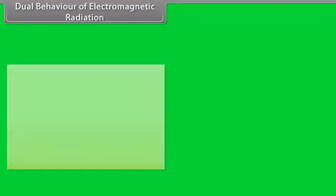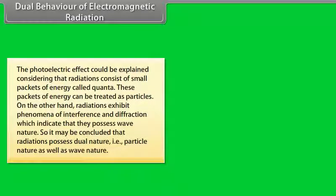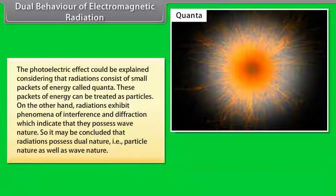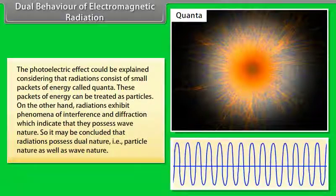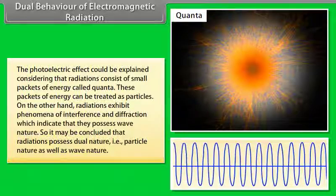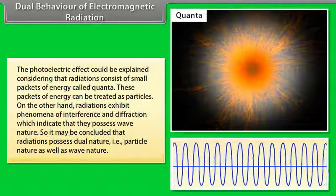Dual behavior of electromagnetic radiation: The photoelectric effect can be explained by treating radiation as small packets of energy (quanta) behaving as particles. On the other hand, interference and diffraction indicate wave nature. It may be concluded that radiation possesses dual nature — particle nature as well as wave nature.